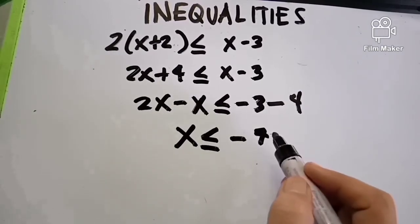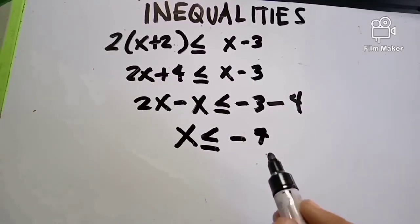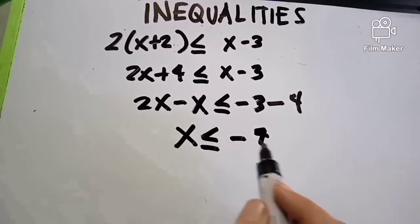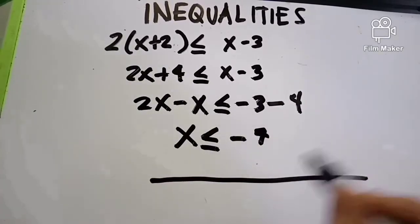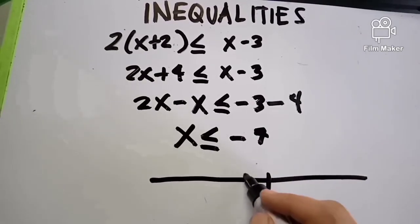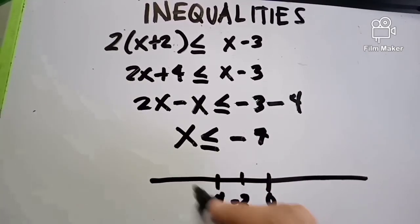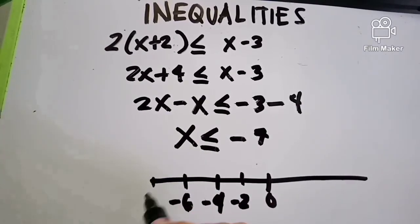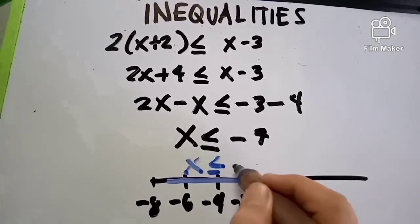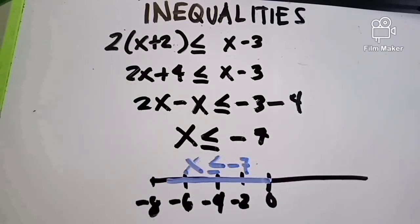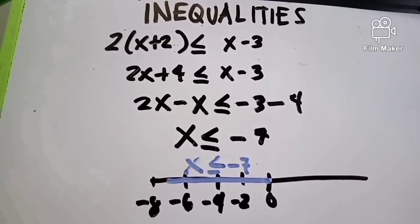How do we graph negative 7? We draw a number line starting at 0, going to negative 2, negative 4, negative 6, and negative 7. Since X is less than or equal to negative 7, the graph goes to the left from negative 7. That is our answer: X less than or equal to negative 7.